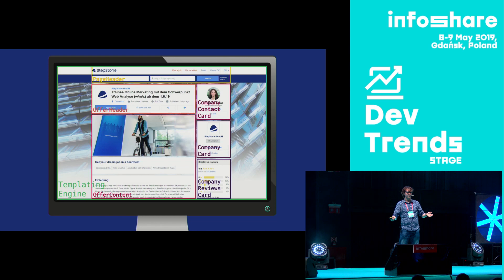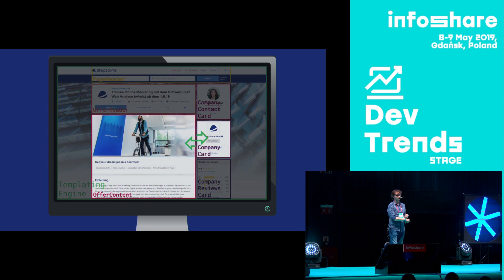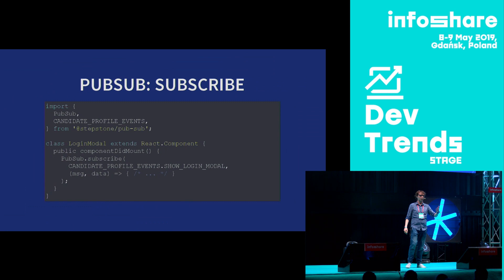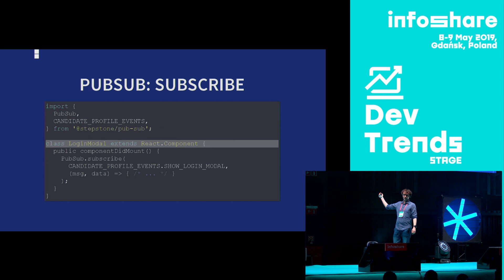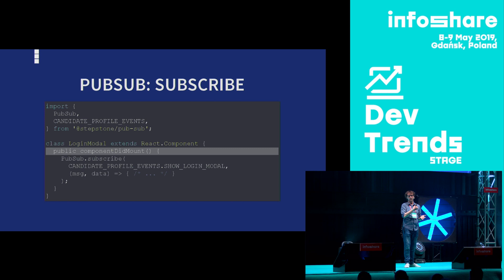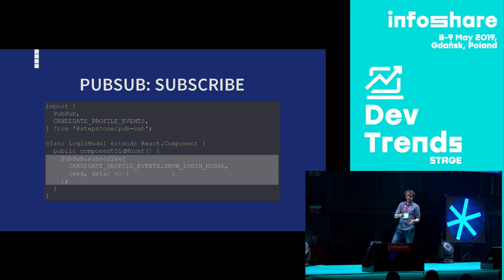Beneath this templating engine, we have micro-frontends which, besides being rendered by the templating engine, sometimes need to communicate with each other. We satisfy this need with a simple implementation of the very well-known publisher-subscriber pattern. As you can see in this example, which represents a login modal implemented as a React component, whenever this component is mounted on the page, it will subscribe to a very specific message, and whenever such a message is published, it will react in a specific way — in this case, it will just pop up.